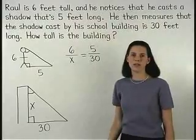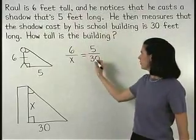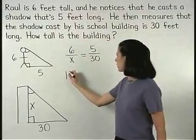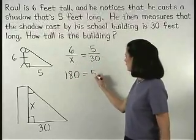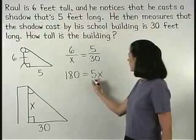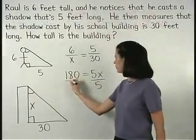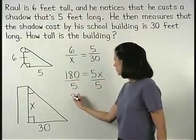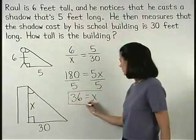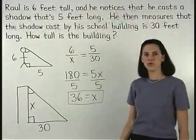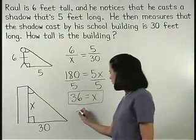Solving from here, we have 6 times 30 or 180 equals x times 5 or 5x. And dividing both sides by 5, 36 equals x. So the school building is 36 feet tall.